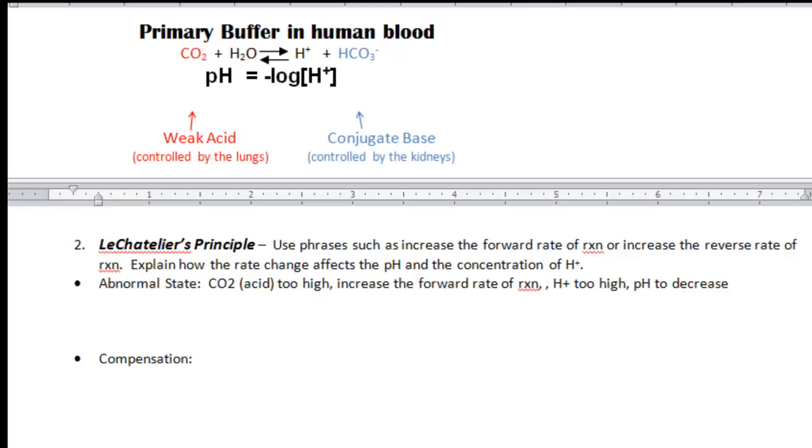Now we'll deal with the compensation. Well, from our summary, we concluded that the bicarb should increase. If the bicarb increases, that's going to increase the reverse rate of reaction. Using Le Chatelier's principle, we can see if we add bicarb to the system, it will cause the reverse rate to increase. If that occurs, that will consume the hydrogen ion, and that will cause the pH to increase.